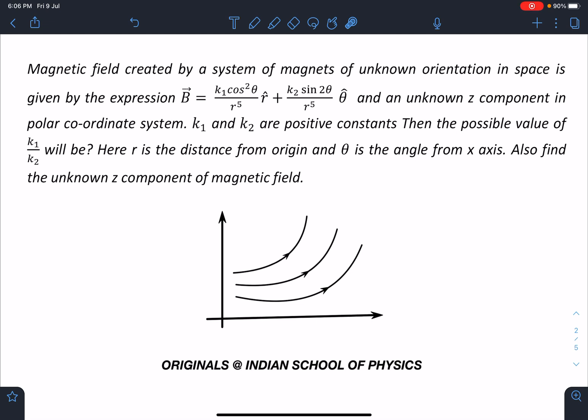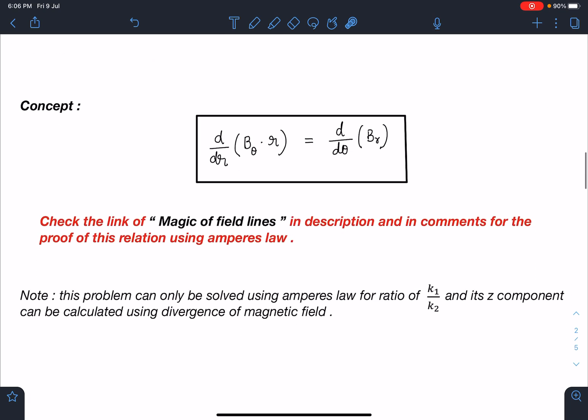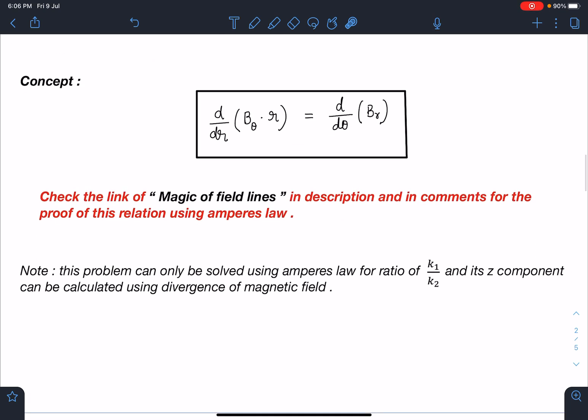This was the old problem with a different B, right? I have added one line of unknown z component. I'll explain why this was required and why now this type of problem can only be solved by using Ampere's law and we cannot apply divergence logic here, which was creating some kind of confusion. Also find the unknown z component of the magnetic field.